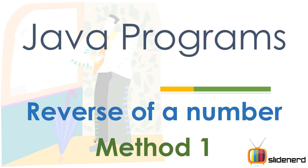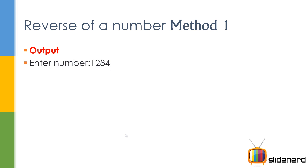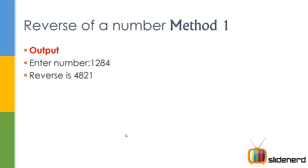What's up ladies and gentlemen, from Slide Nerd, this is Weebs. Welcome to this tutorial where I'm going to be showing you how to take the reverse of a number. First question: why would you take a reverse? Well, even I don't know — if you know, please comment and let me know. The output is going to be something like this: enter your number 1284, reverse is 4821. There are two ways of doing this; in this video I'm going to talk about the first, simpler way.